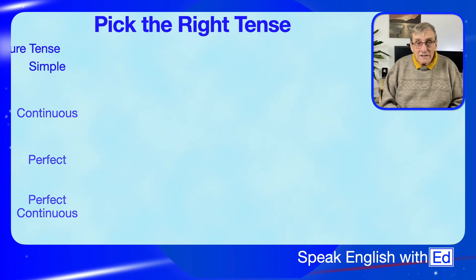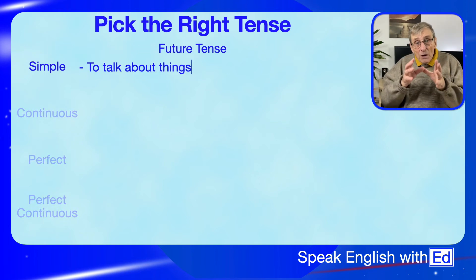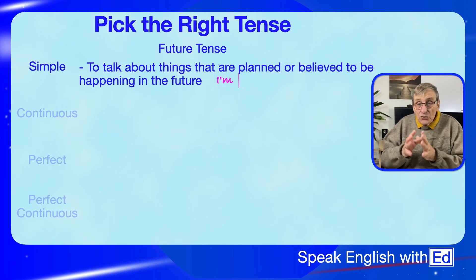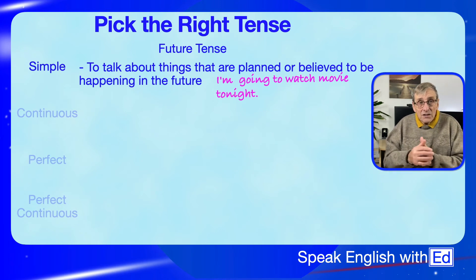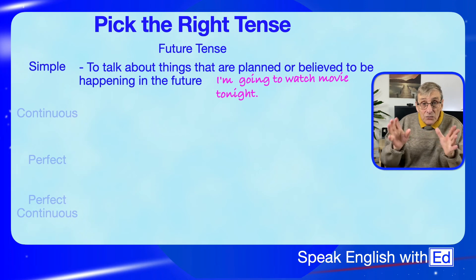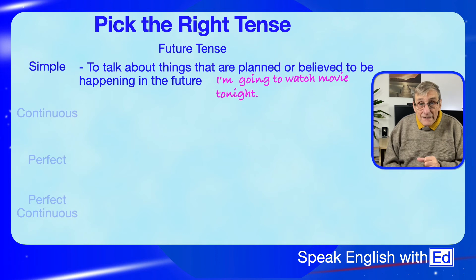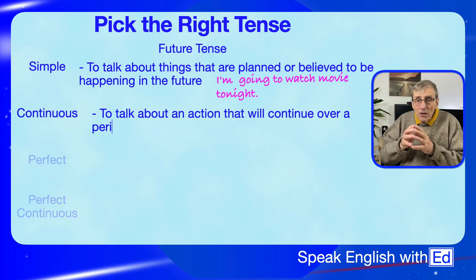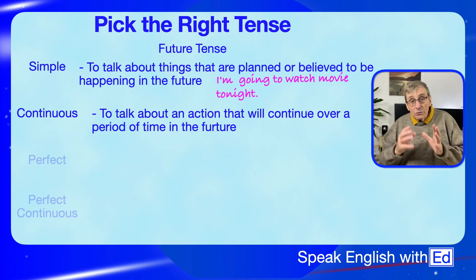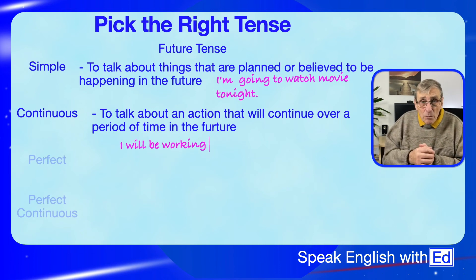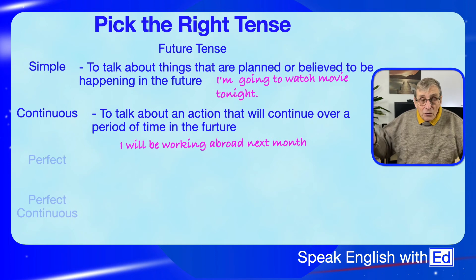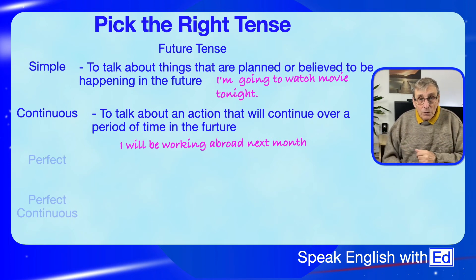Now let's look at the future tenses. The future simple is used to talk about things you know are going to happen or believe will happen — something you've planned: 'I'm going to watch a movie tonight.' The future continuous is used to talk about an action that will continue over a period of time in the future: 'I will be working abroad next month' — you're being sent to another country to work for a whole month. It's a future continuing action.